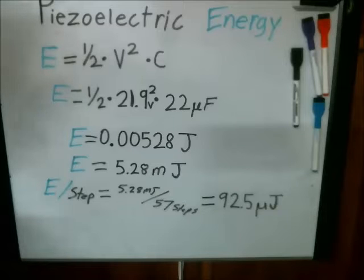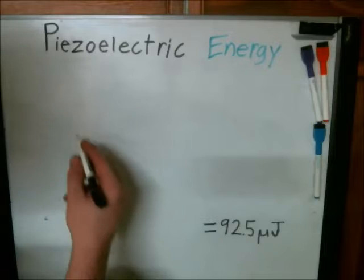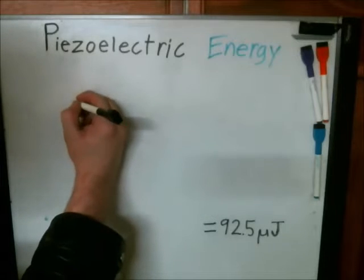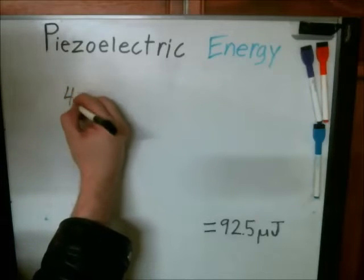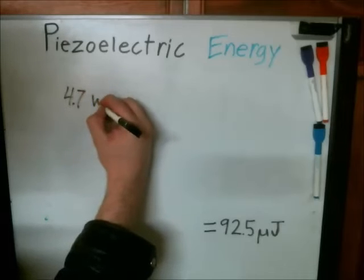So that is a very, very, very small amount of energy. And just to give you an idea of scale, my cell phone battery holds 4.7 watt hours,